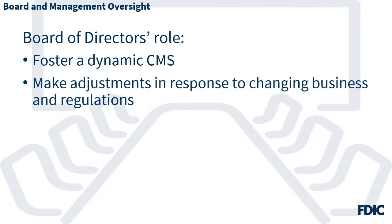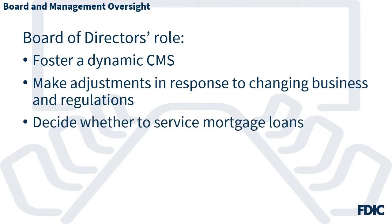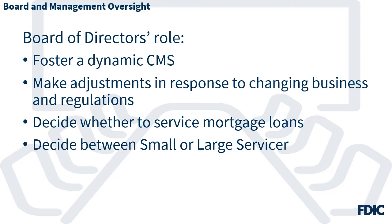This includes making adjustments that reflect changes to a bank's business over time as well as regulatory changes. With respect to mortgage loan servicing, the Board decides whether the bank will service mortgage loans at all, and if so, whether they want the bank to attain or maintain small servicer status. The requirements for maintaining small servicer status and demonstrating ongoing compliance may also be a factor in your bank's business decision.